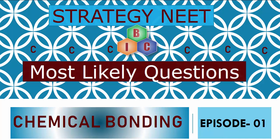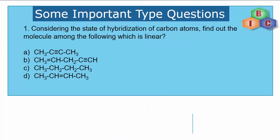Let's begin this episode of Strategy NEET on Chemical Bonding and Molecular Structure. The first question: considering the state of hybridization of carbon atoms, find out which molecule among the following is linear. From the given set of four options we need to find which one is linear in nature. This question is purely based on the concept of hybridization.